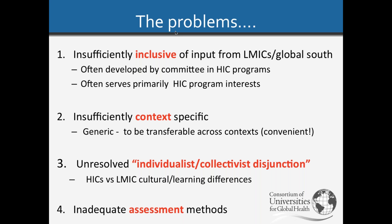The second major controversy is that competency lists have taken insufficient view of the context of the countries in which people are working. Lists have been drawn up to be transferable across contexts as a matter of convenience, rather than being context-specific for the different areas where students and trainees are working. The third problem is what he calls the individualist-collectivist disjunction—not sufficiently perceiving differences in learning between high- and low-income countries.